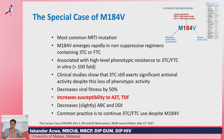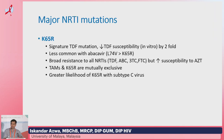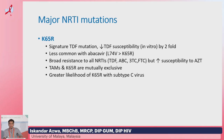M184V also increases susceptibility to AZT and TDF. Then you have the K65R, which is the signature tenofovir mutation — it reduces tenofovir susceptibility in vitro by twofold, confers broad resistance to all NRTIs including tenofovir, abacavir, 3TC, and FTC, but increases susceptibility to AZT.